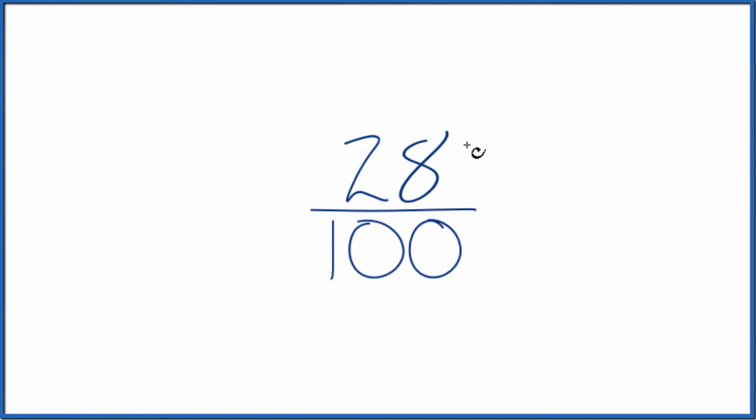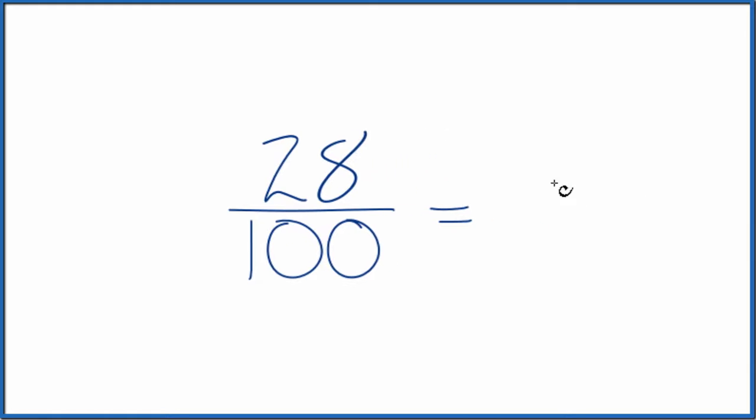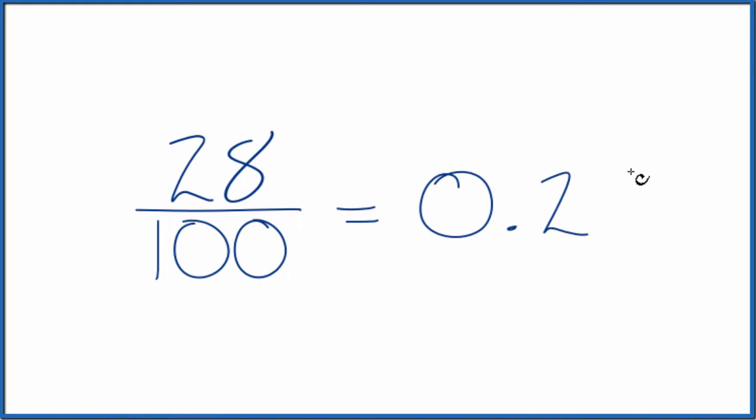Let's write the fraction 28 hundredths as a decimal. There are a few ways to do it. You could just put 28 divided by 100 in your calculator and get 0.28. Or you could divide 28 by 100 longhand. You'd still get 0.28.